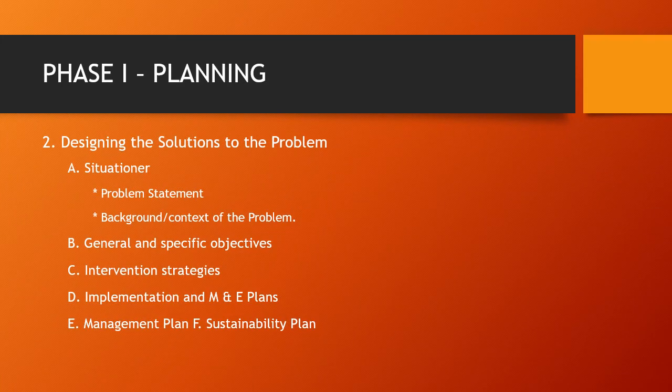Phase one, number two is designing the solutions to the problem. This includes: letter A, situation — problem statement and background or context of the problem; letter B, general and specific objectives; letter C, intervention strategies; letter D, implementation and M&E plans; letter E, management plan; letter F, sustainability plan.